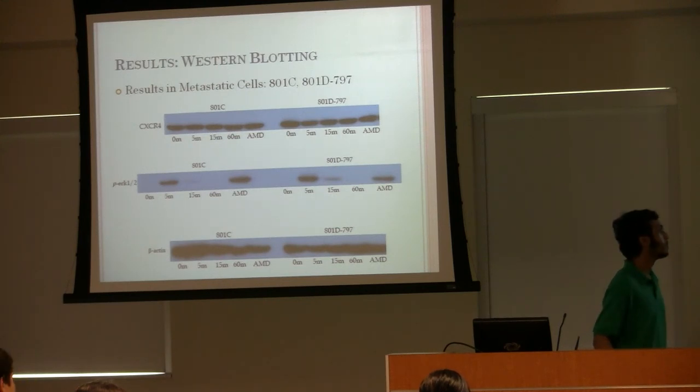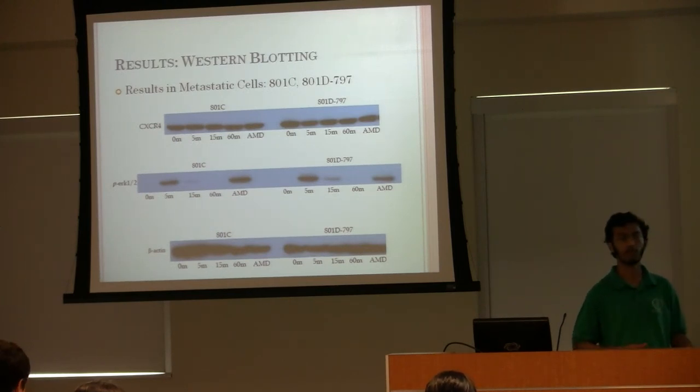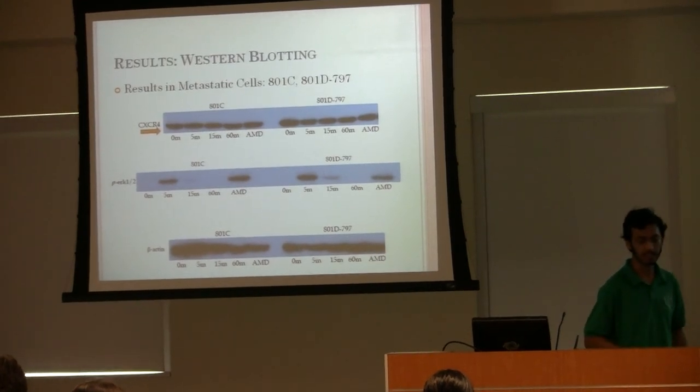What did we find here? We first looked at CXCR4 expression. We expected that CXCR4, since it's an indicator of metastatic ability, we expected it to be expressed more in 797 cells than 801C cells. However, this was not the case. It was expressed about equally in both cases.